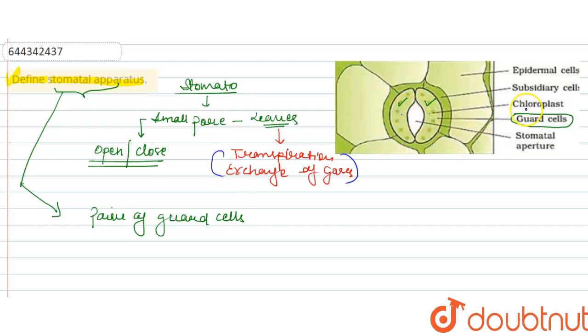And into this guard cell the chloroplast is present here. These small circular structures we can see here, these are the chloroplast. This is the pore and this pore is termed as a stomatal aperture.